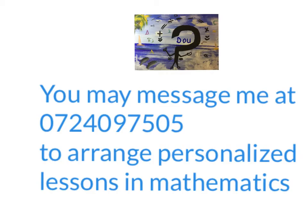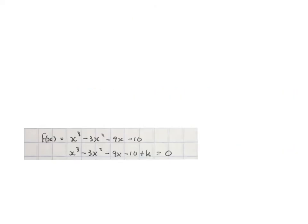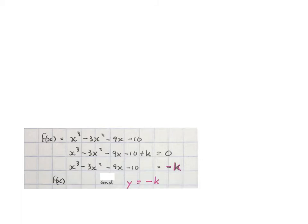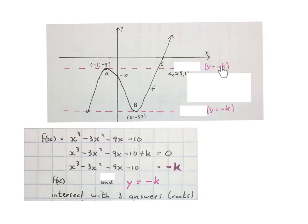You may message me to arrange a personalized online lesson in mathematics. If you understood the first technique, stop the video — the next method is a totally different technique. Here we have our equation of f of x, and they ask that f(x) plus k equals zero must have three distinct roots. We take the plus k to the other side, giving f of x equal to minus k. So we now have two graphs: f of x and y equals minus k. We want these two graphs to intersect at three points. We draw horizontal lines at each stationary point where y equals minus k — the top line is y equals minus 5 and the bottom one is y equals minus 37.